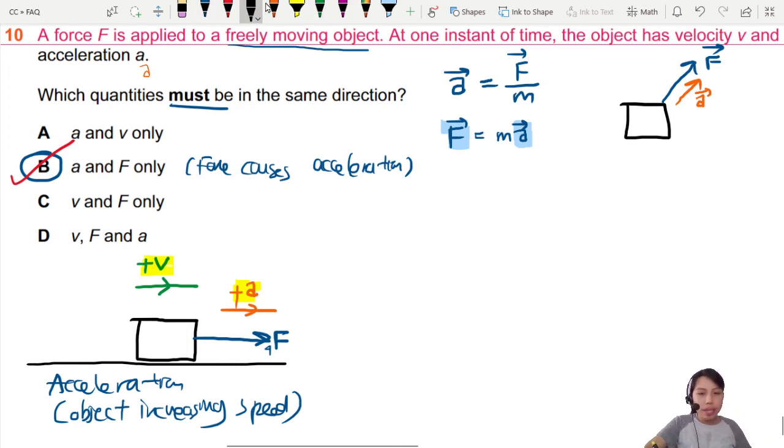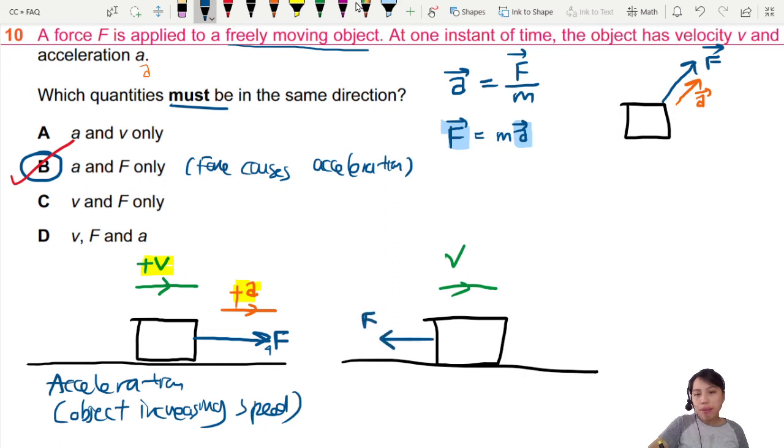What if you have something a little different? Maybe the box is moving to the right, but there is a frictional force or some other force that is acting to the left. Now, because the force is pointing to the left, acceleration will be to the left.